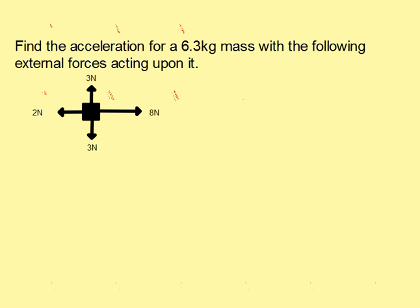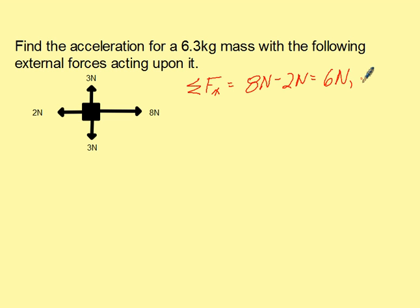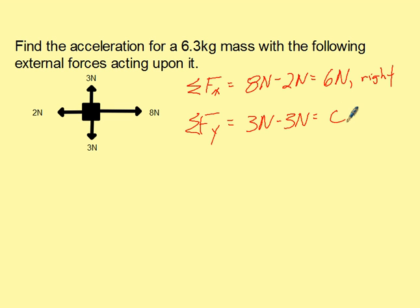What if we need to find the acceleration for a 6.3 kilogram mass with the following external forces acting upon it? The first thing we need to do is find the net forces in each direction. The net force in the x direction is 8 newtons minus 2 newtons, which gives us 6 newtons net force to the right. The sum of the forces in the y direction is 3 newtons up and 3 newtons down, which gives us a net force of zero.